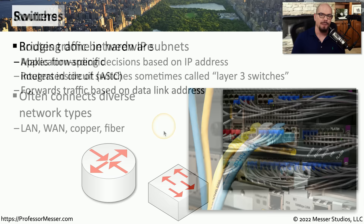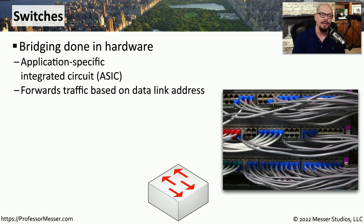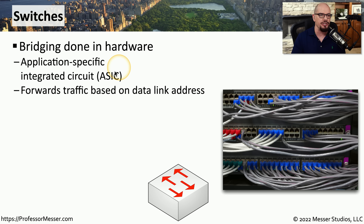Another common infrastructure device is a switch. If you're using a copper cable to plug in a laptop or desktop computer, you're commonly plugging directly into a switch. A router forwards traffic based on the destination IP address, while a switch determines where traffic should be forwarded based on the destination MAC address inside a frame. Switches are able to forward traffic at very high rates of speed, and many have an application-specific integrated circuit, or ASIC, which allows for very fast throughput.